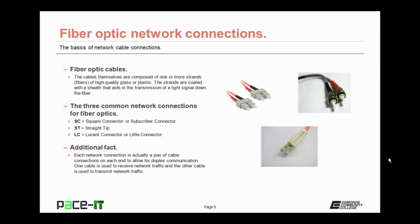There are three common types of network connections for fiber optics. There's the SC connector — the square connector or subscriber connector. There is the ST connector, the straight tip, and then there is the LC, also known as the Lucent or little connector. When fiber optics are used in networking, each network connection is actually a pair of fiber optic cables — one to receive network traffic and one to transmit, allowing for duplex communication.